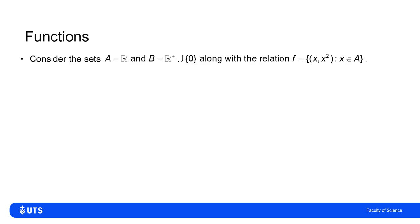This might seem unusual, but let's call set A the set of all real numbers, and B the set of all non-negative real numbers. The relation f is the set of all ordered pairs (x, x²) such that x is a real number.